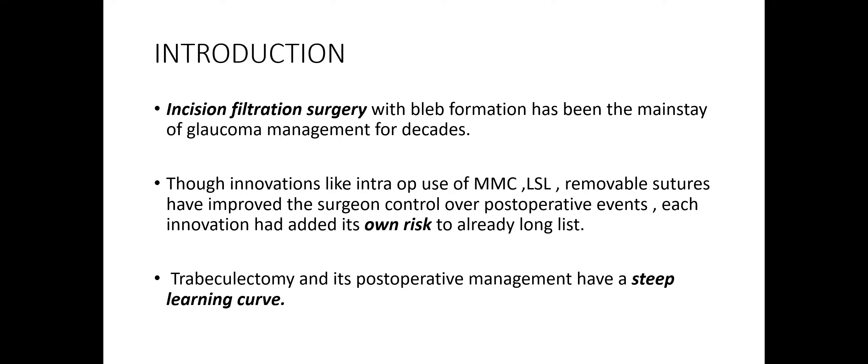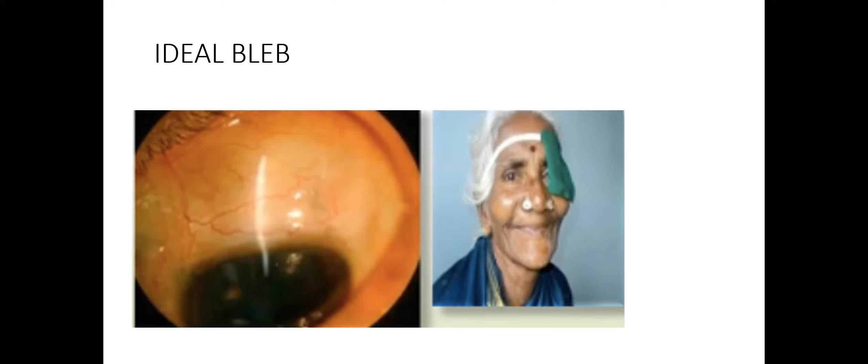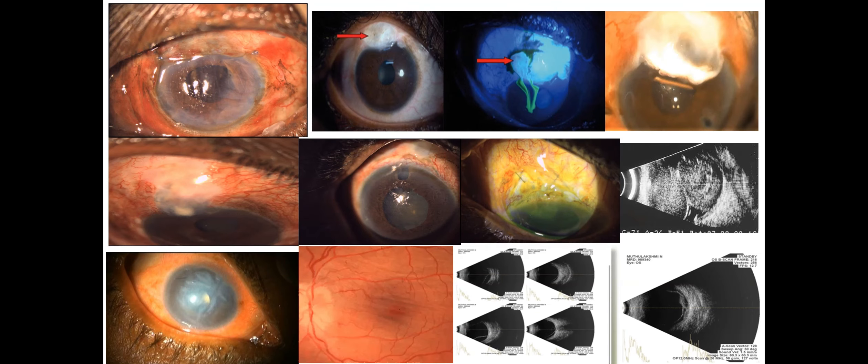Despite improvements and innovations, trabeculectomy still comes with a heavy cost of complications. Though we expect every surgical outcome with low diffuse bleb and a smiling patient, unfortunately, we face several complications ranging from shallow anterior chamber, bleb leak, blebitis, hypotony, and choroidal detachment.